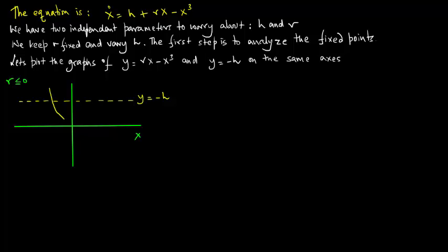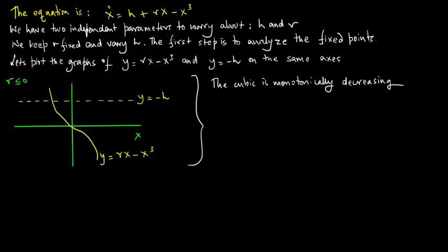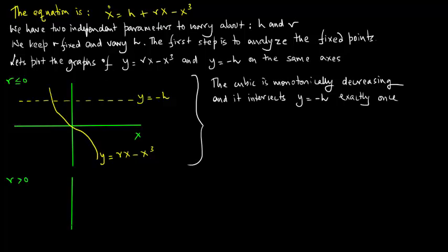For r less than or equal to 0, that's the line y equals minus h and that's the curve for y equals rx minus x cubed. Note that the cubic is monotonically decreasing and it intersects with y equals minus h exactly once.